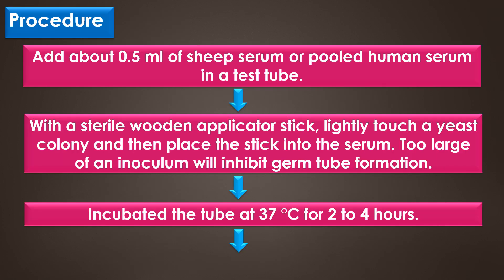Procedure: first, add about 0.5 ml of sheep serum or human serum in a test tube. With a sterile wooden applicator stick, lightly touch a yeast colony and then place the stick into the serum. Too large of an inoculum will inhibit the germ tube formation, so it should be avoided.